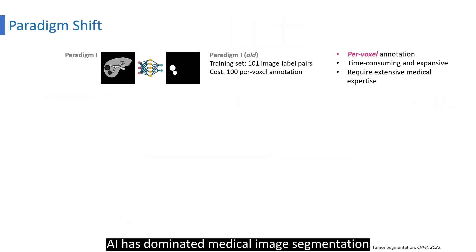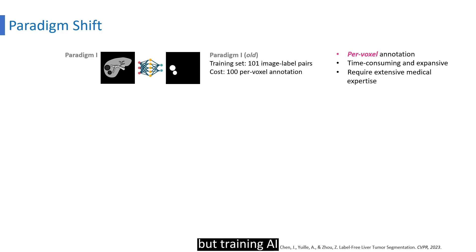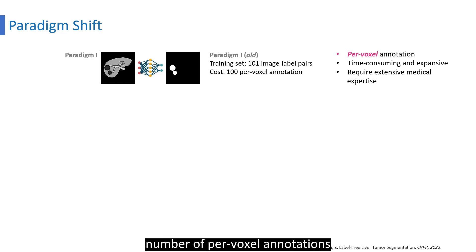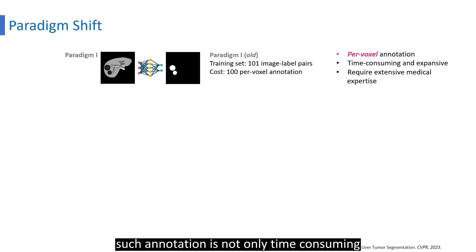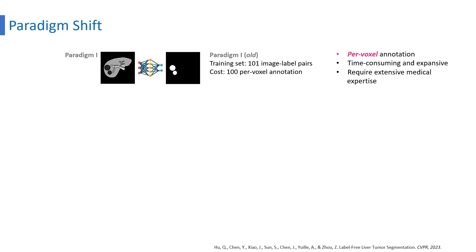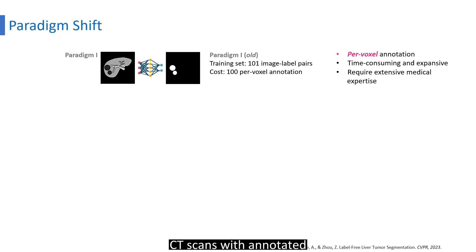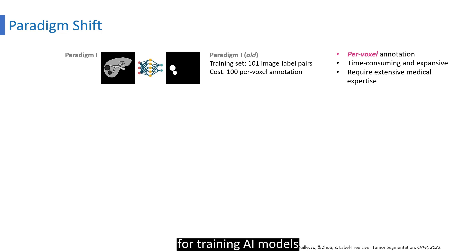AI has dominated medical image segmentation, but training AI models often requires a large number of voxel annotations. Such annotation is not only time-consuming but also requires extensive medical expertise. Therefore, only roughly 100 CT scans with annotated liver tumors are publicly available for training AI models.